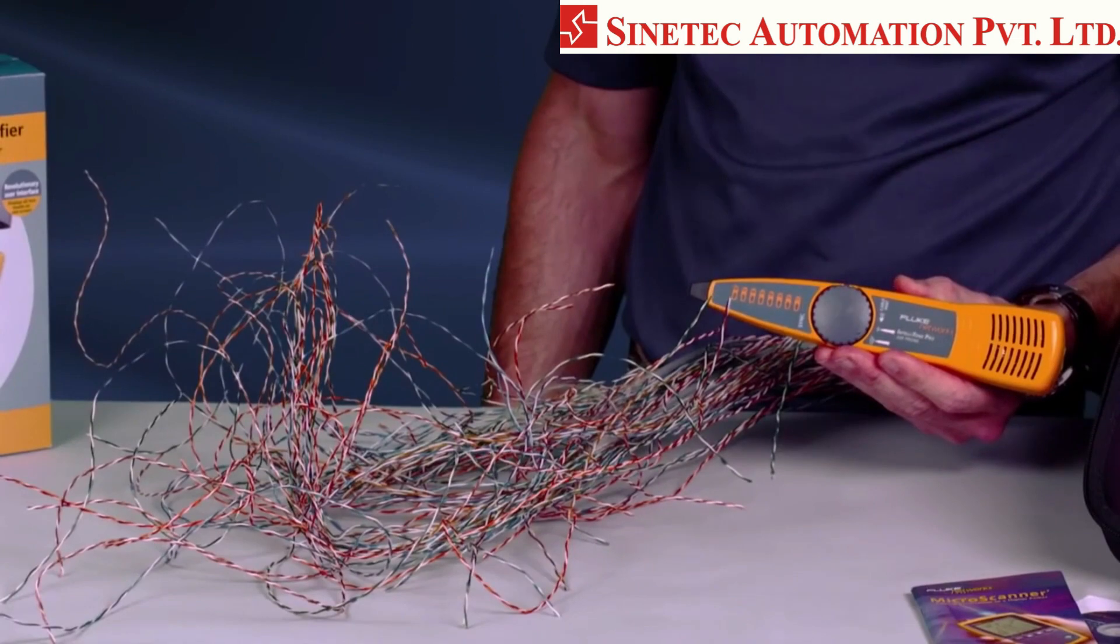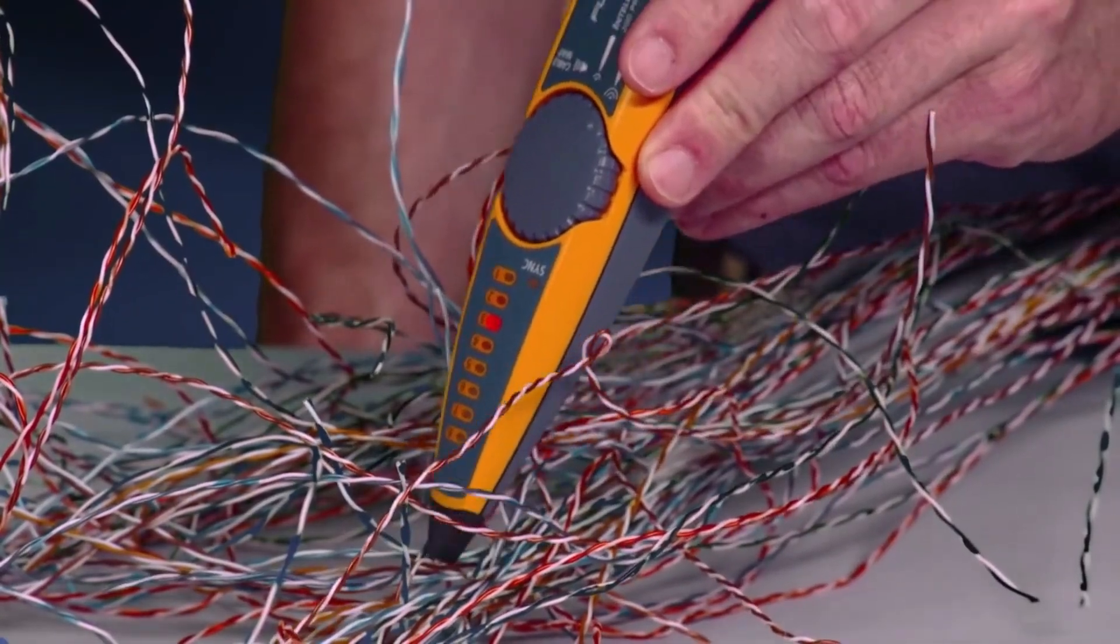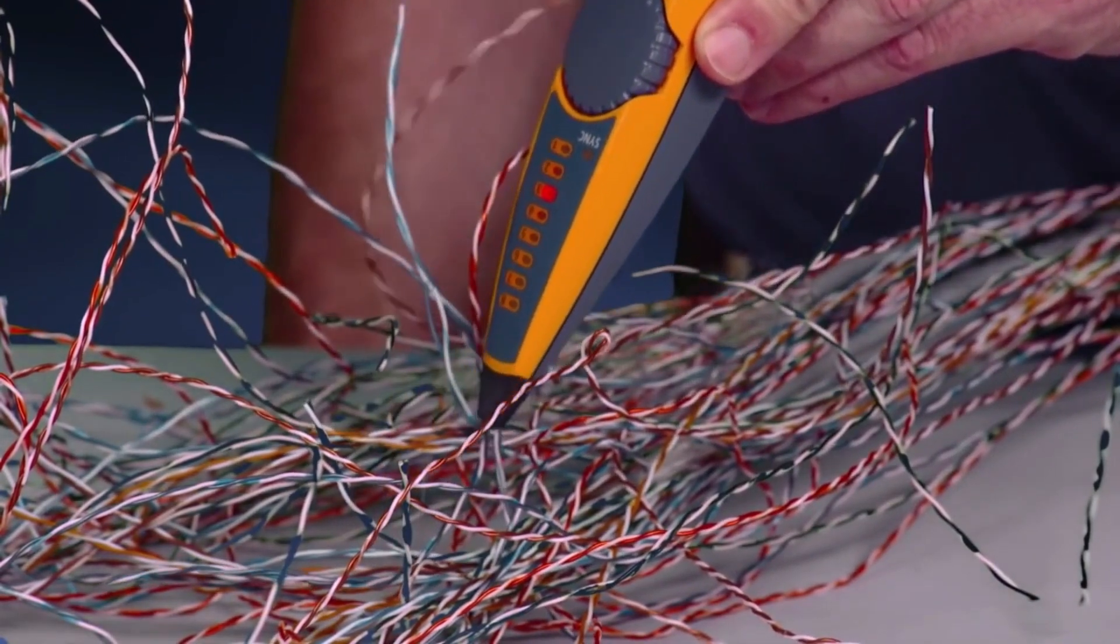We've connected the toner to a random pair in our rat's nest of cabling. It's no problem for the IntelliTone Pro from Fluke Networks. The IntelliTone Pro finds the right wires every time.